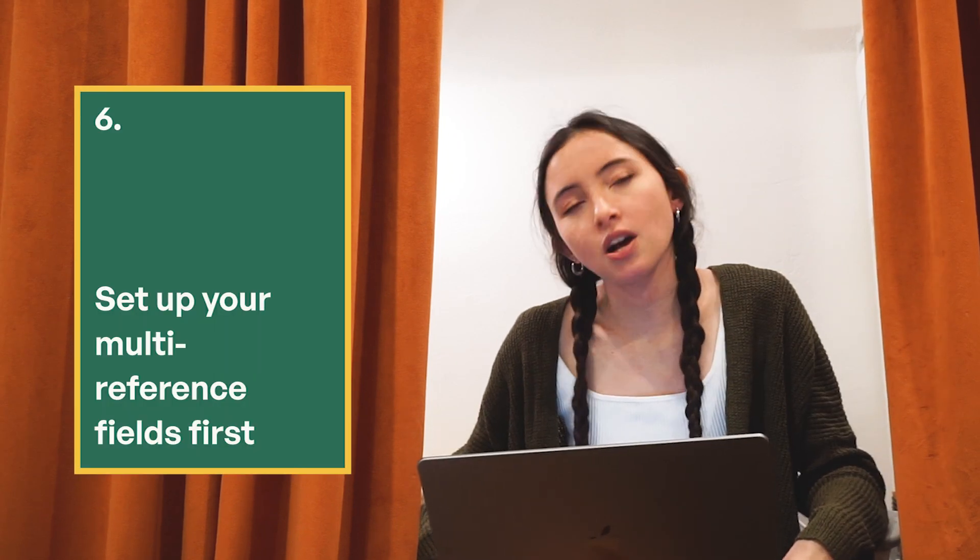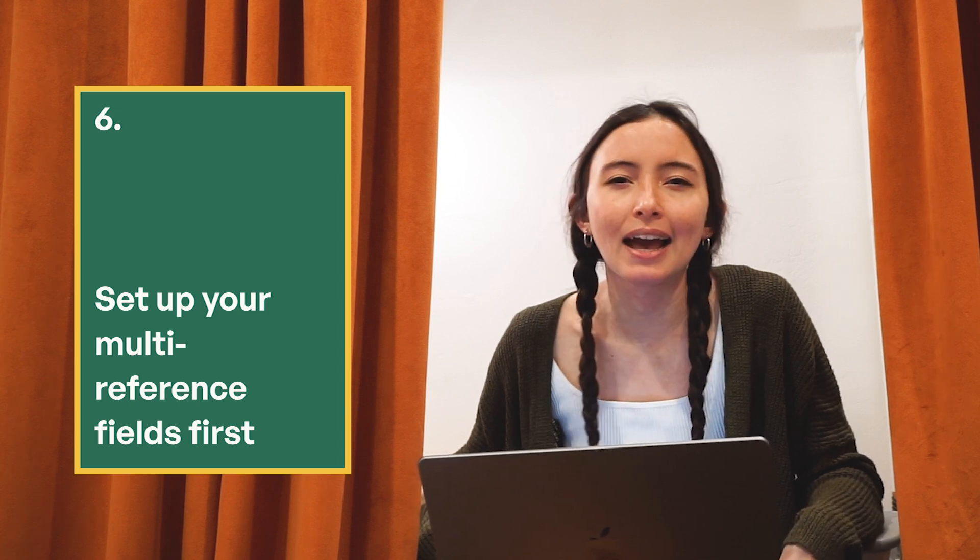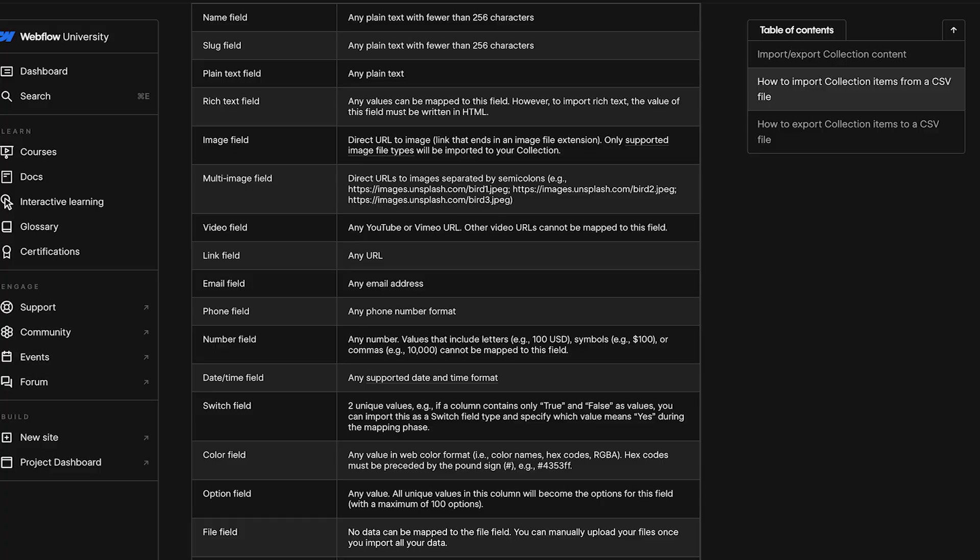Reference fields — we're talking things like blog categories, blog tags, product categories, things like that. You're always going to want to upload that CMS collection first, and then the reference field values are the slugs, the URLs, separated by a semicolon. All of this is available on the Webflow University table that shows you what fields can import and which ones can't. Best practice is to get that table done first so that everything references correctly in your big table.